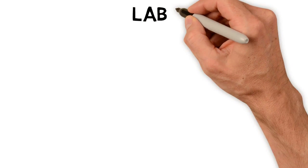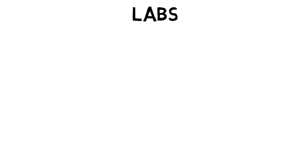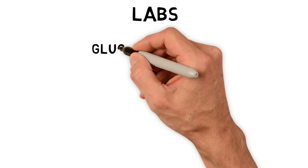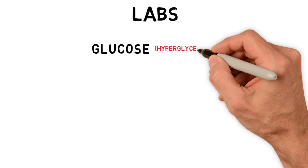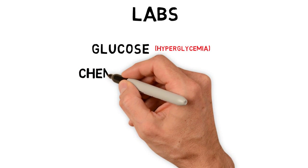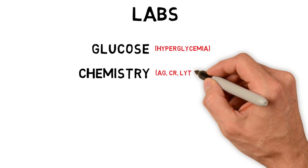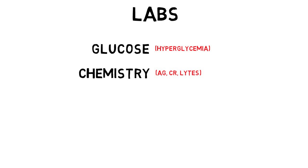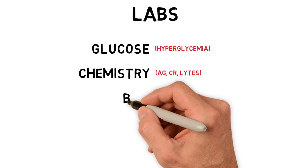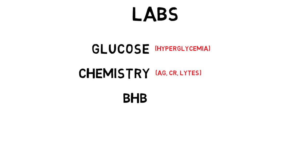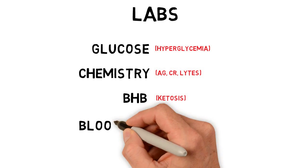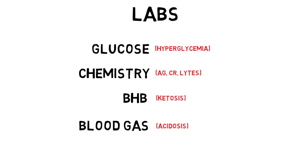Critical initial labs are drawn to further characterize the DKA and include a glucose to evaluate hyperglycemia, chemistry to evaluate anion gap, renal function, and electrolyte abnormalities, beta-hydroxybutyrate which is more reliable than urine ketones in evaluating ketosis, and a blood gas to evaluate acidosis.